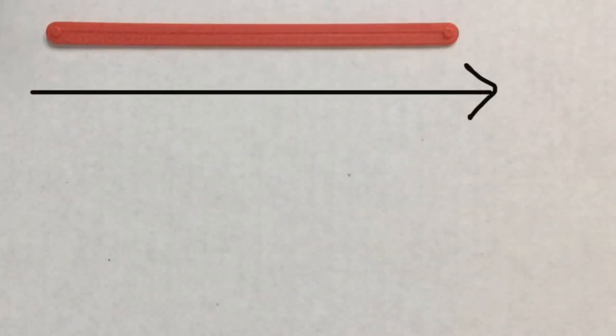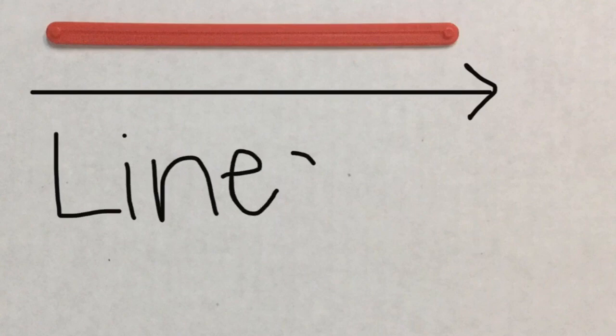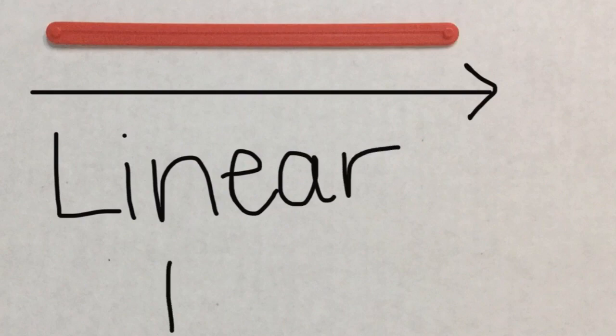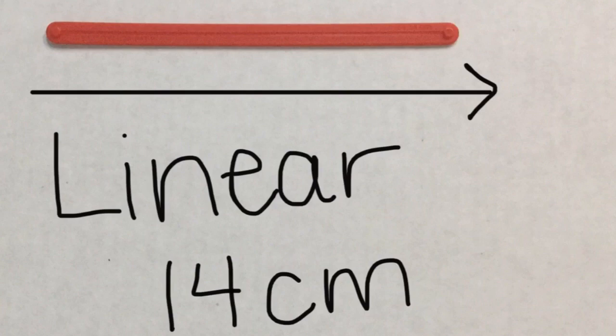First thing I would like you to think about is a straight line, one dimension. We call this linear because it has a line. We say that it's one dimension because it's 14 centimeters, just centimeters, one dimension.